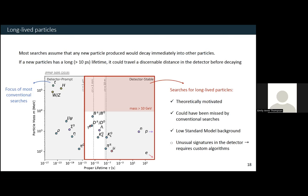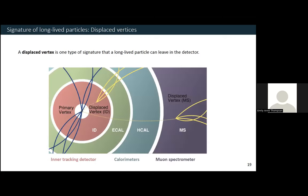The reason this hasn't been done as much before is because long-lived particles leave unusual signatures — the detector wasn't really designed to search for them and it's just harder. But as the null results begin to pile up, we begin to think about how we can expand our searches and do something different.